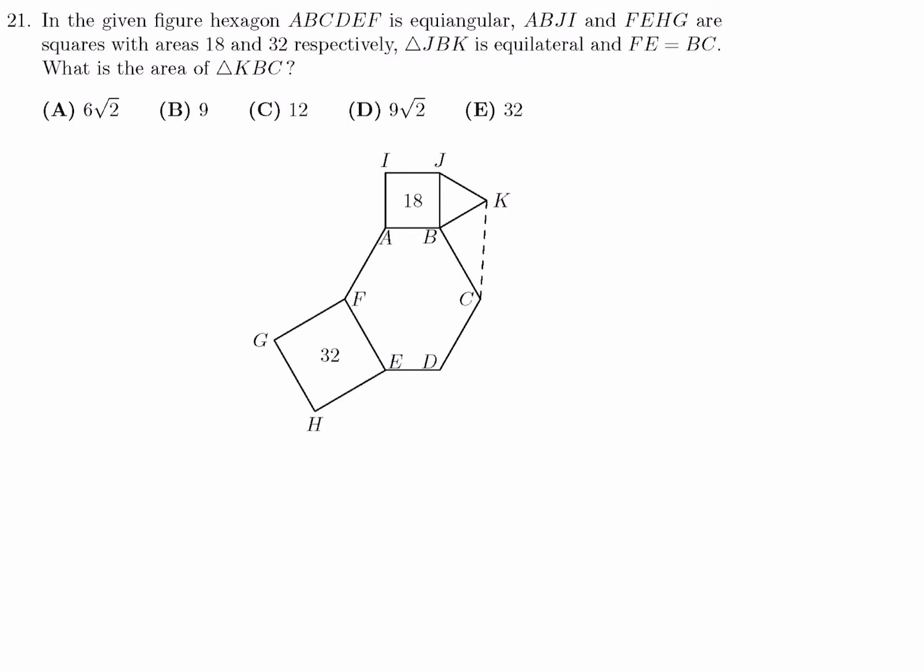Well, if this is the area, then that means the side length will be root 18, right? That's how you would be able to get an area of 18. And in a very similar way, if this is the area, then the side length would be root 32. And they told me that FE is equal to BC. So, since FE is root 32, BC is root 32.